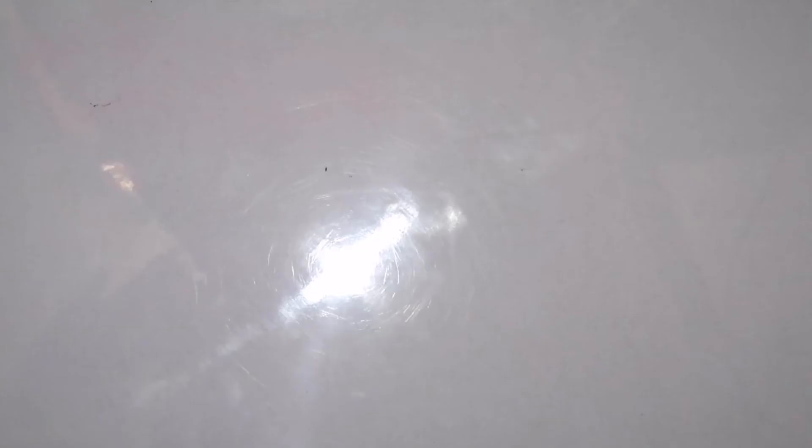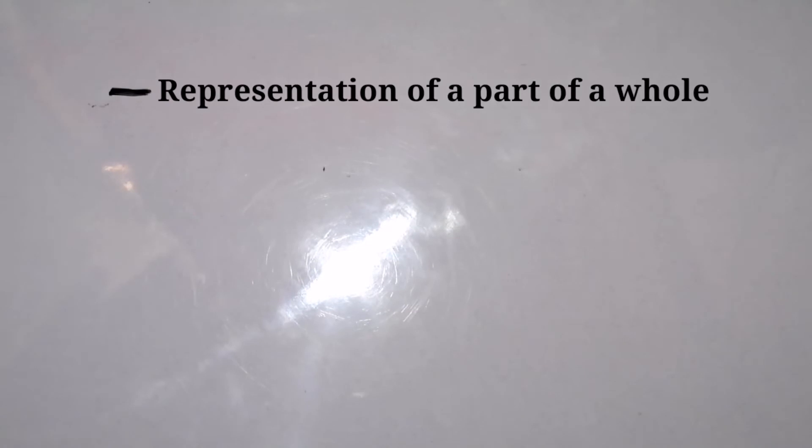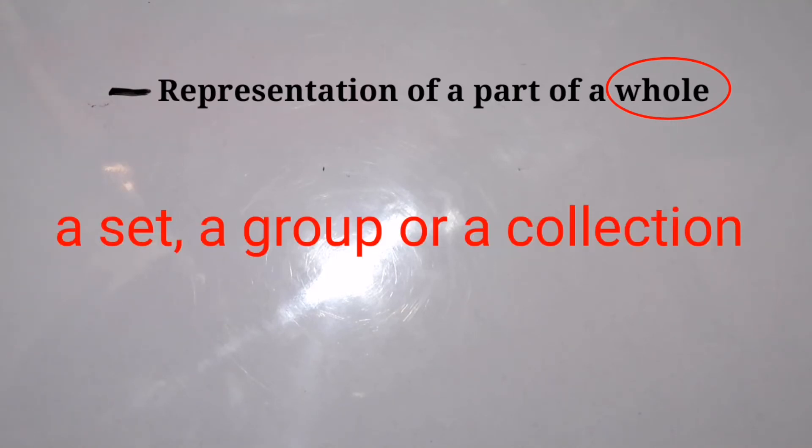For our last example, let's go back to our definition of fraction, which is a representation of a part of a whole. Let's take note of this term 'whole.' This whole does not only pertain to a single thing that is being divided equally, like a pizza or an apple. However, this whole can also pertain to a set, a group, or collection of things.